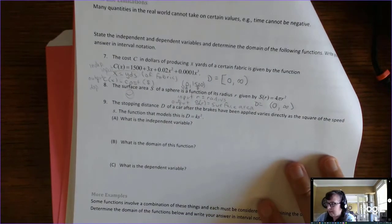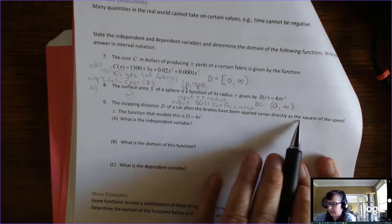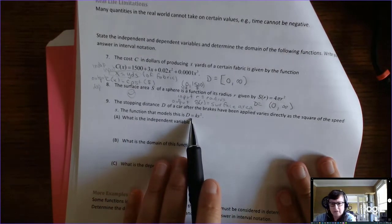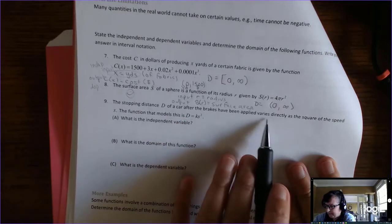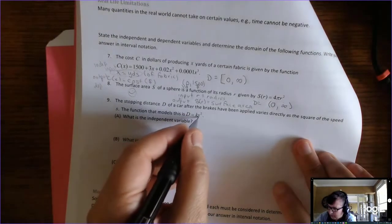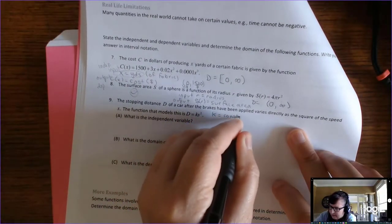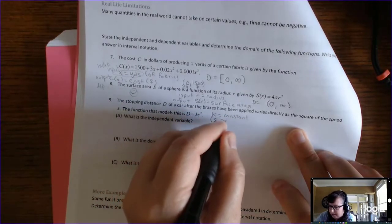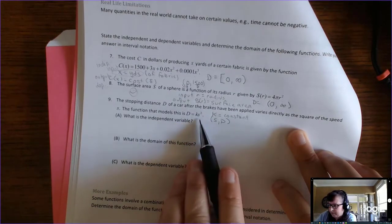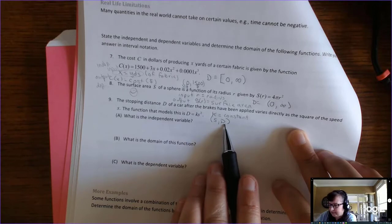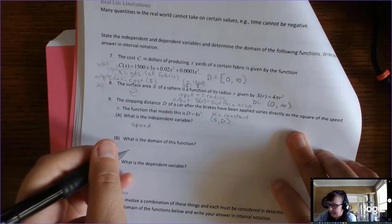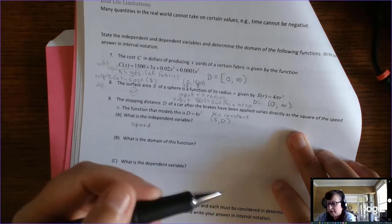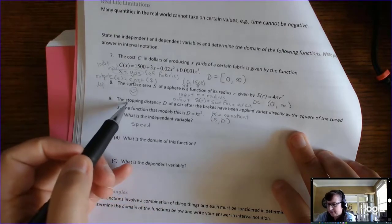All right. And then this last one, the stopping distance of a car after the brakes have been applied varies directly as the square of the speed s. So, in algebra two, back in the day, you had to be able to write this function. Well, don't worry about it. I gave it to you right here. So, d equals ks squared. Now, read carefully. Stopping distance, d, varies directly as the square of the speed s. So, my two variables are s and d. This k is a constant. You just treat it like a number. So, the ordered pairs I'm concerned about are, if I know the speed, my input, then my output will be the distance, stopping distance. So, the independent variable is the speed. And my dependent variable would be stopping distance. The speed you travel is what's going to cause your stopping distance. Stopping distance depends on your speed. If you're going really, really, really fast, it's going to take you a long time to stop.